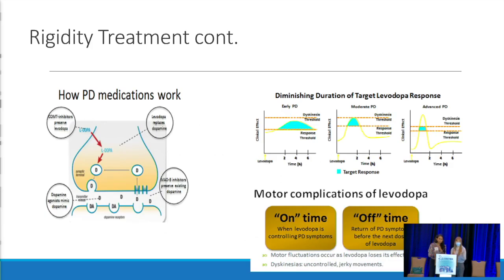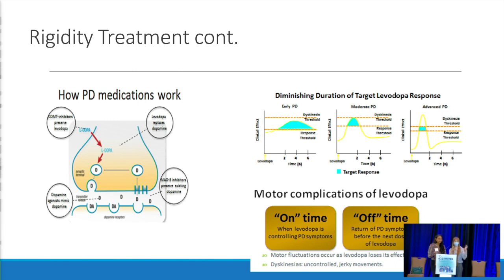Dopamine works both presynaptically — where dopamine is stored in the neuron — and at the receptor level. Medications can flood the receptors or slow dopamine breakdown. With dopamine medications, people talk about on time and off time: when the medication works it kicks in quickly, lasts a couple of hours, then wears off. We try to make that on time as long as possible by using long-acting medications and better formulations so people can move properly, be awake, and feel better.